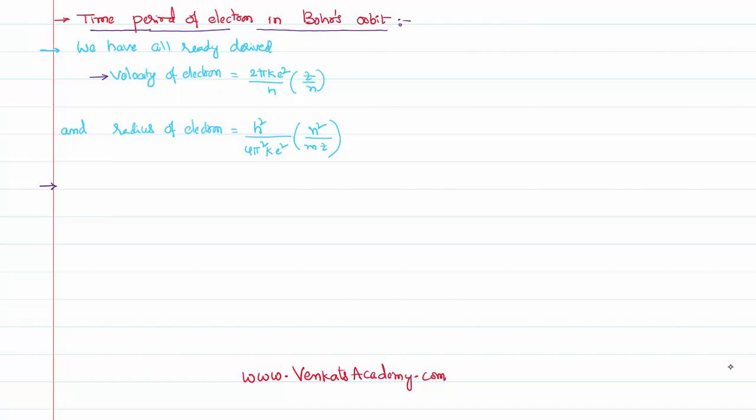The velocity of an electron in a given orbit is 2πke² by h, multiplied by z by n, where k is a constant 1 by 4πε₀, e is the charge of an electron, h is Planck's constant, z is the atomic number, and n is the principal quantum number.